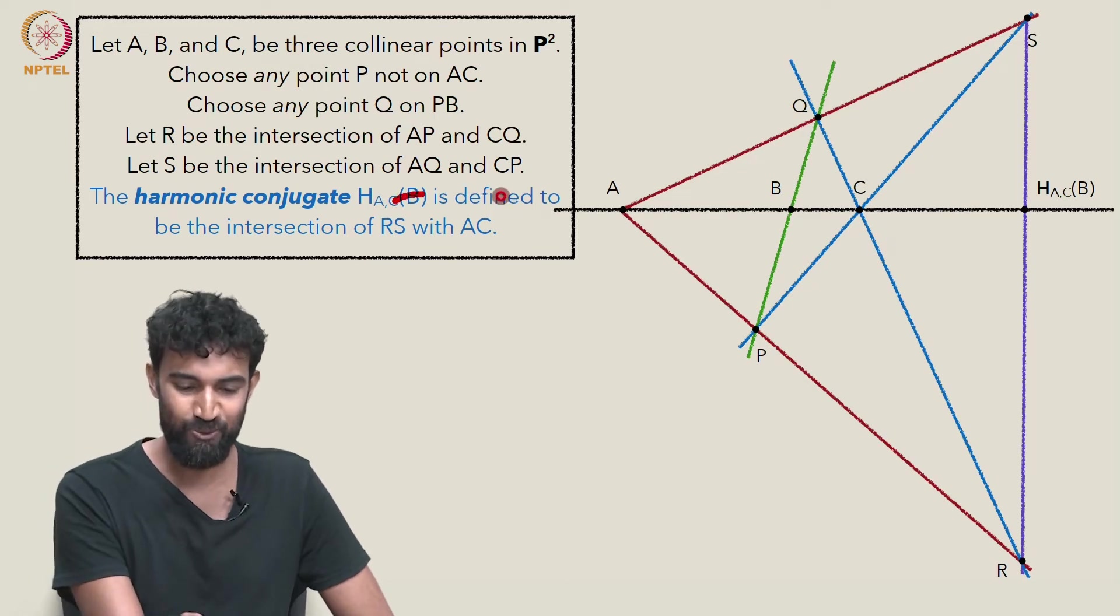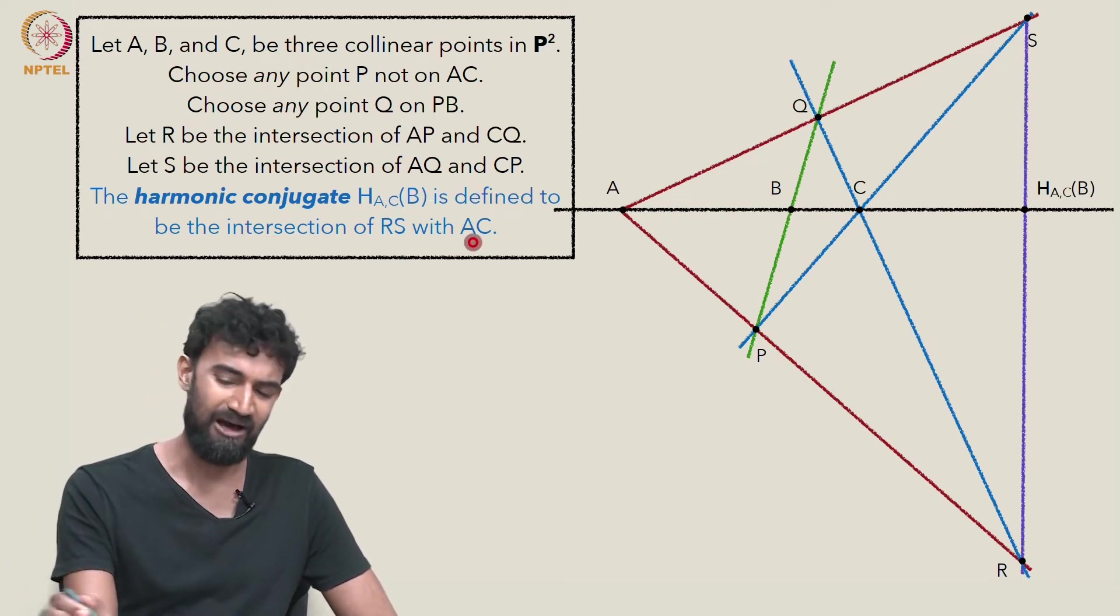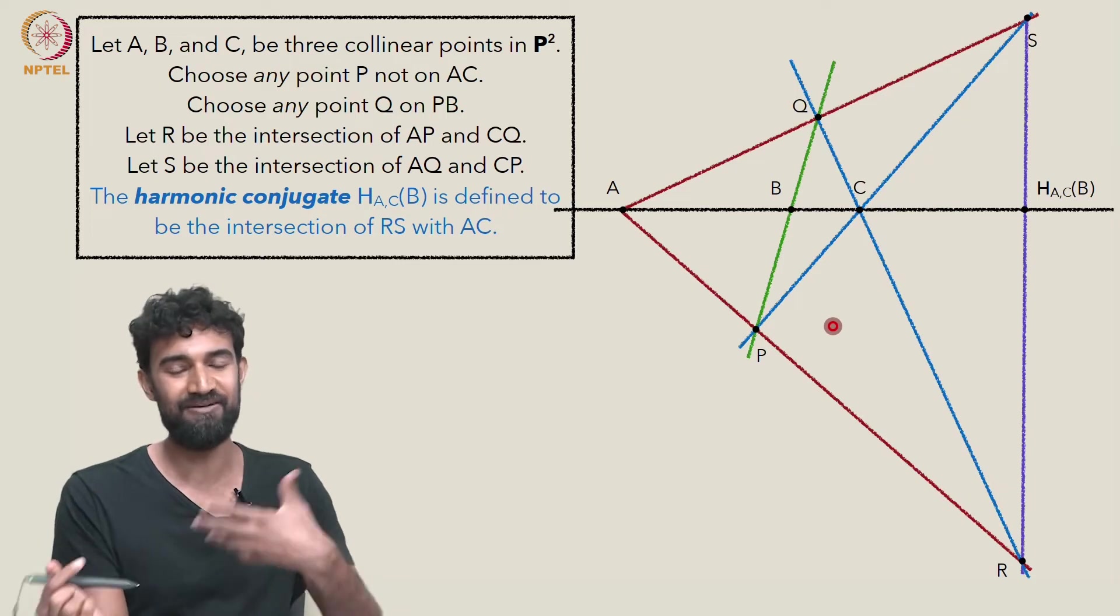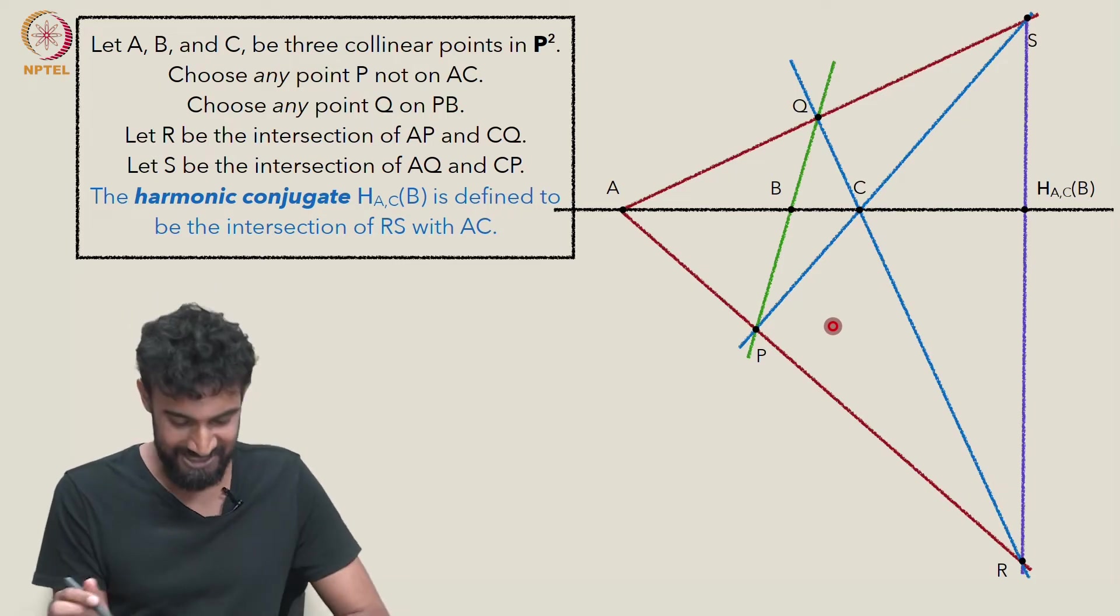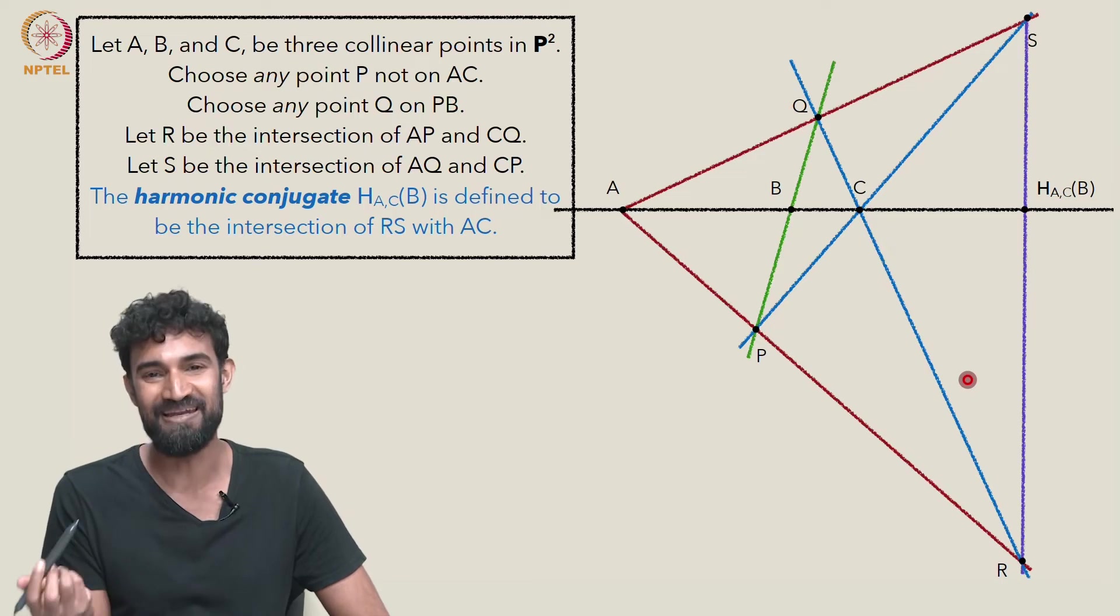So it seems to still be well-defined, the theorem still seems to hold, but our proof, our justification involving this perspective view doesn't seem so justified anymore.